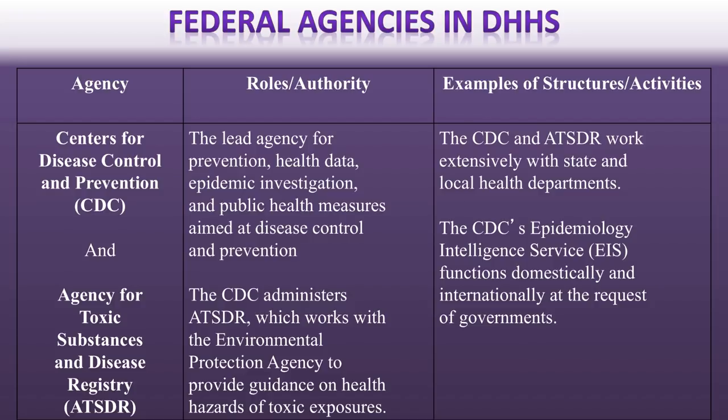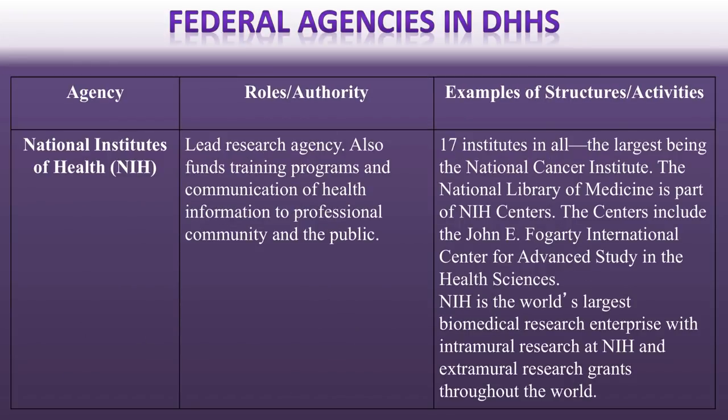We also have federal agencies in the Department of Health and Human Services. The main one we often think about is the CDC, which is really in charge of public health systems for the United States. They do a lot of research and oversee the Agency for Toxic Substances and Disease Registry, which looks at toxins and environmental exposures — a very key component to public health processes. We also have the National Institutes of Health, the agency that looks at healthcare research across the country, doing a lot of work on how to address things like diabetes, genetics and genomics, and eye diseases across their different institutions.